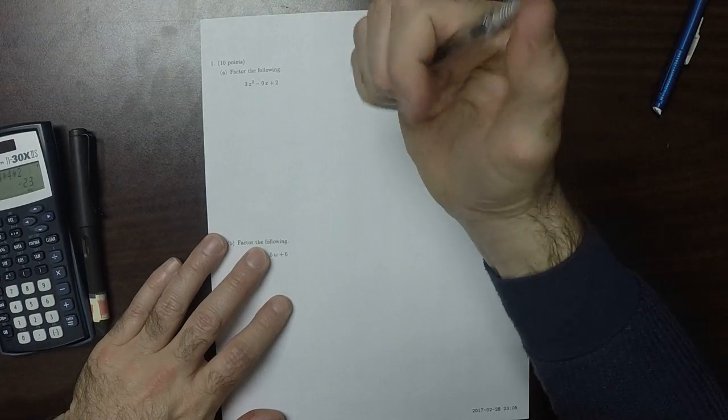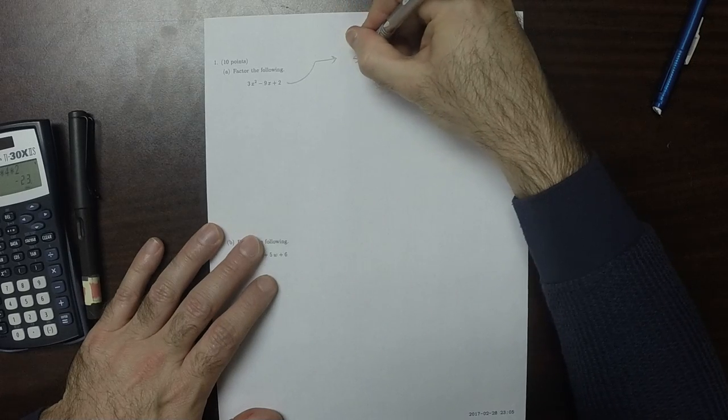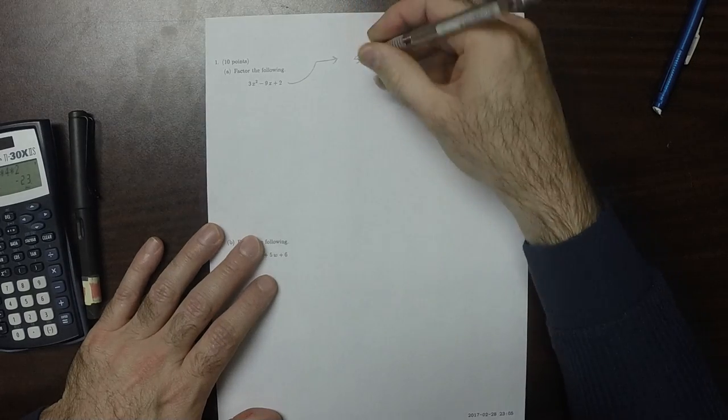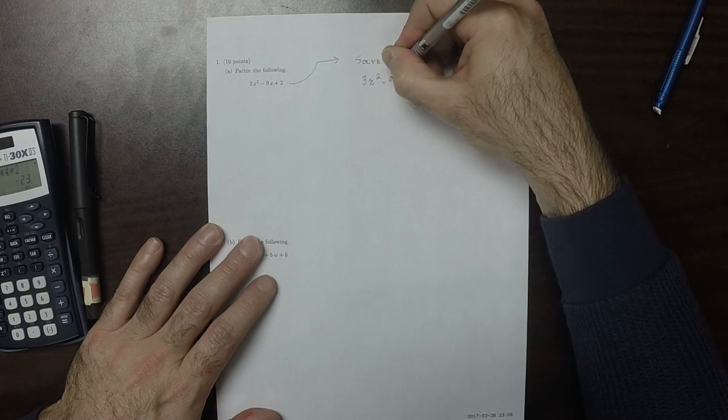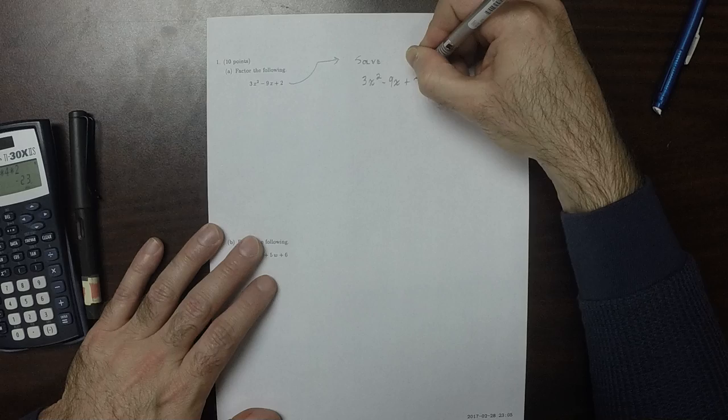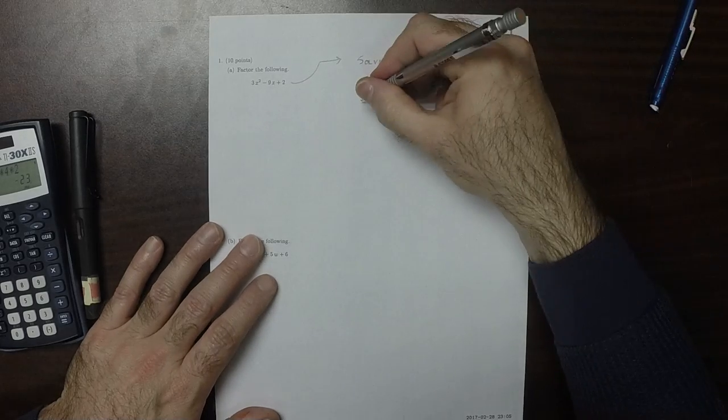So we're going to switch to the related exercise of solving the equation 3x squared minus 9x plus 2 is equal to 0. And we're going to solve it with the quadratic formula.